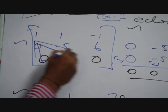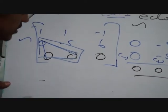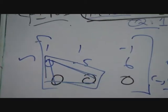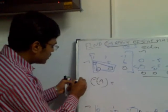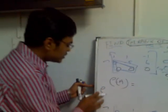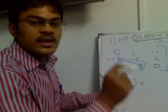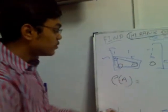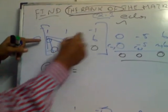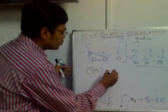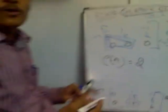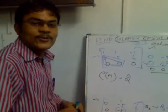We have got the Echelon form. Now write the result. Rank of A — rank is written by bending the letter p, giving the symbol ρ. Rank of A equals the number of non-zero rows. Row 1 is non-zero, row 2 is non-zero, row 3 is all zeros. So the number of non-zero rows is 2. Therefore, rank of A = 2. We have found the rank using Echelon form. Thank you.